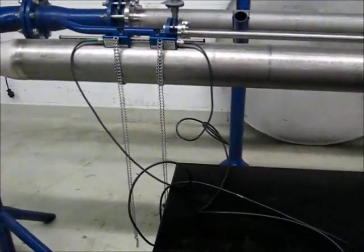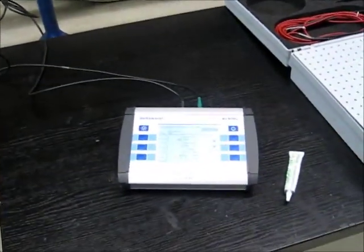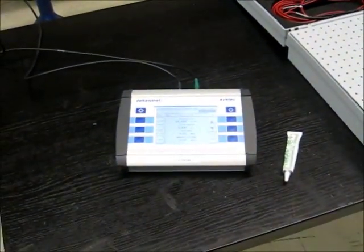During the measurement, you can read your flow data from the large graphical clear text display. DELTAWAVE-C shows all necessary data like flow, velocity, volume, or heat rate.